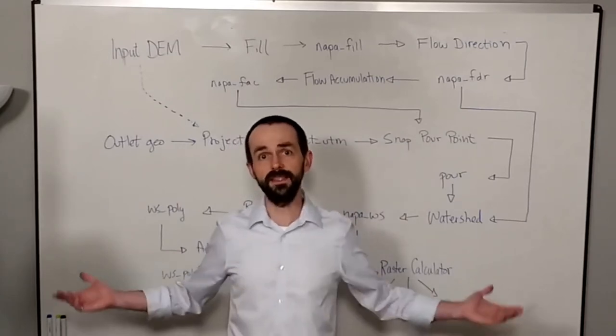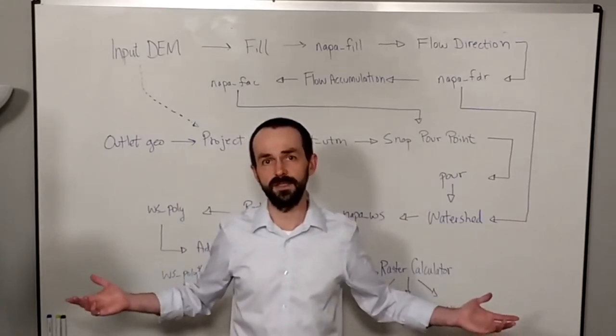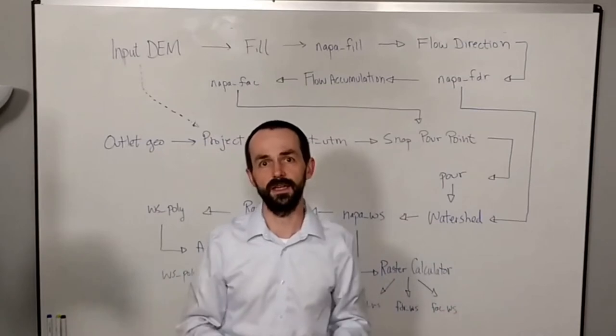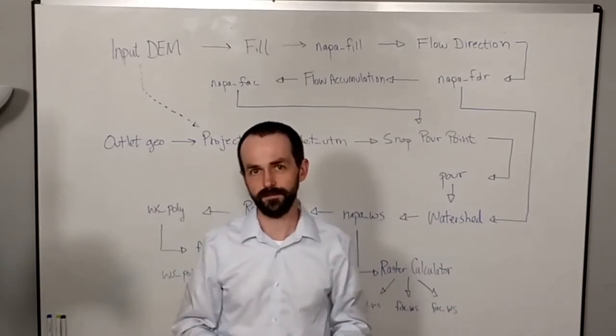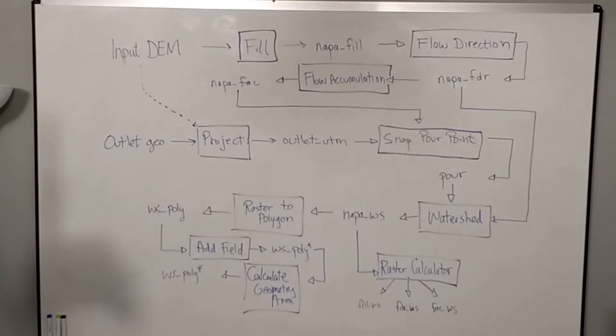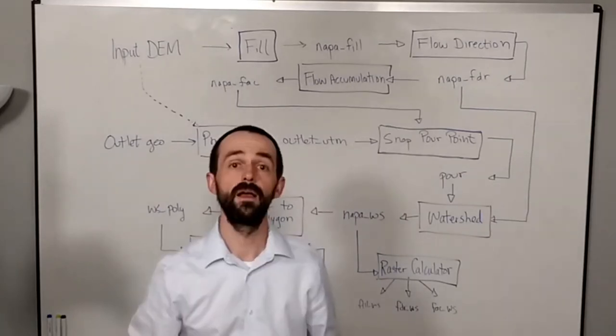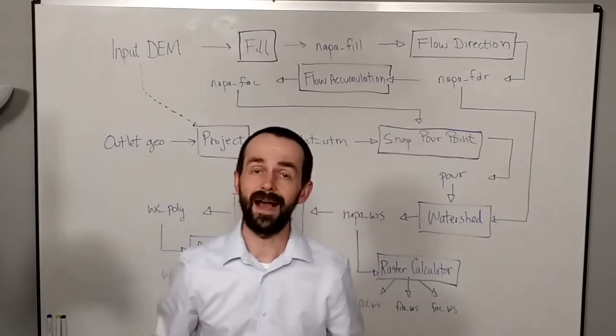We link this series of processes into what we call a GIS workflow. Let's highlight in our workflow the processes and the output layers.